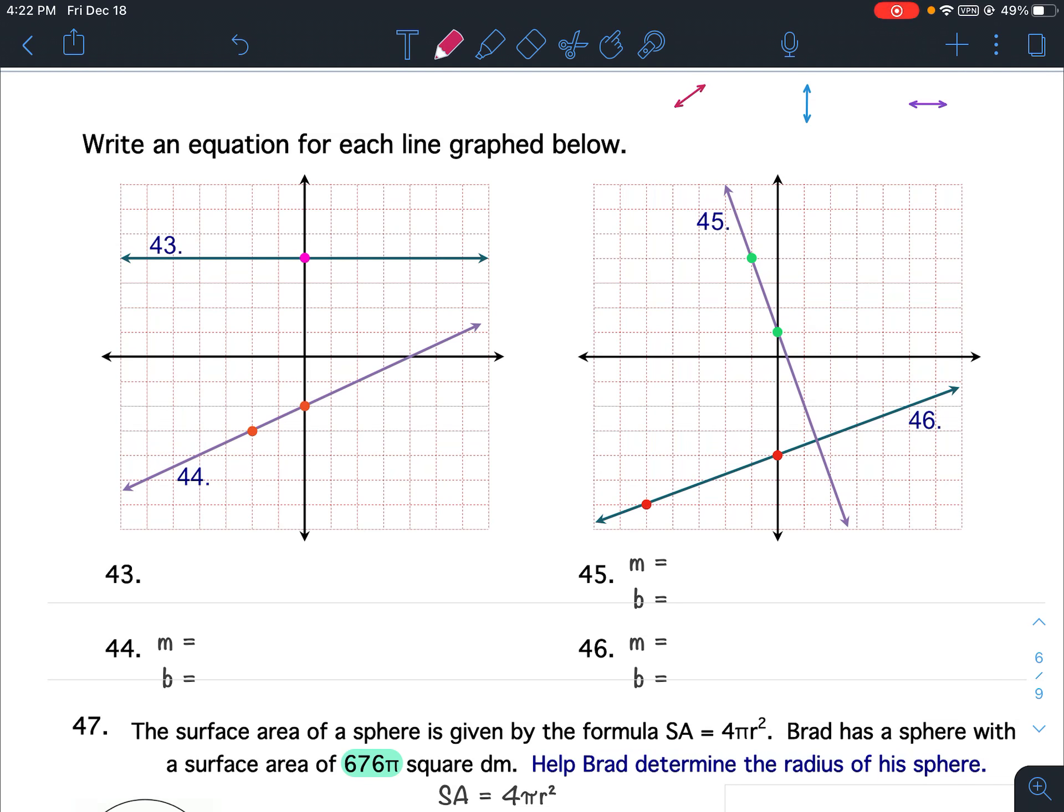Scientific Notation and Linear Equations Lessons 4 through 7 Review. Questions 43 through 46. Write an equation for each line graphed below.